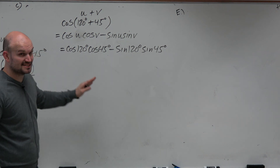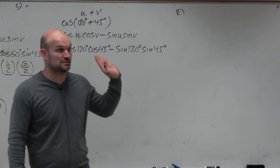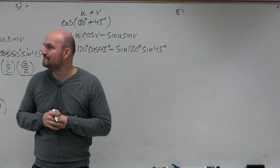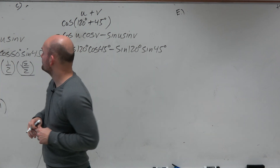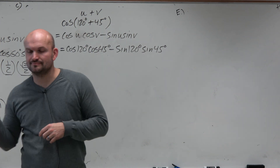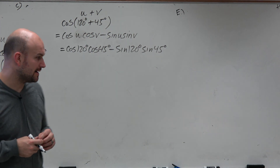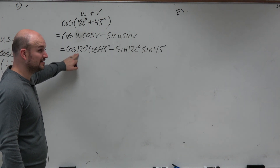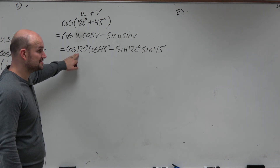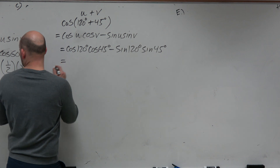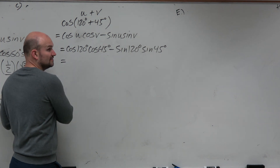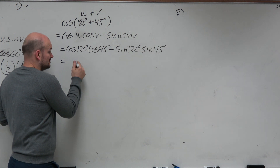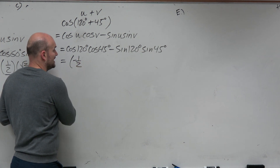Cosine of 120 degrees — that's in the second quadrant. Wait, that was supposed to be 30? Either way, this is now in the second quadrant. So therefore, instead of it being 1/2, now this is going to be negative 1/2. It's in the second quadrant — negative 1/2.